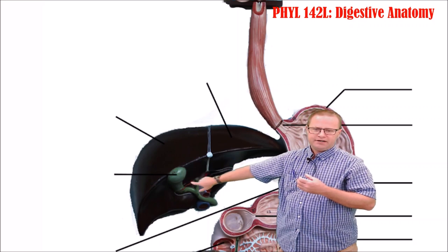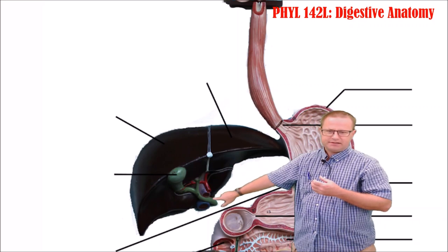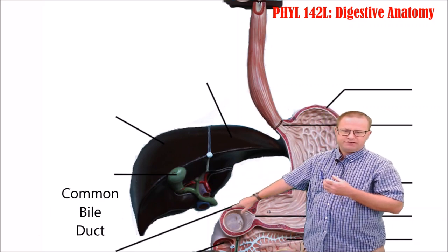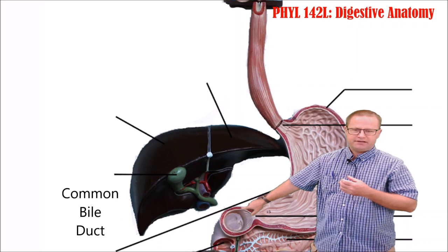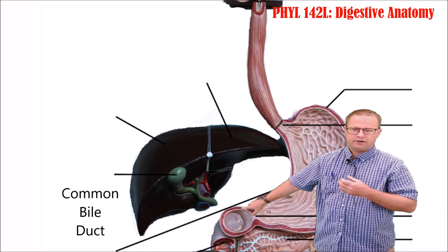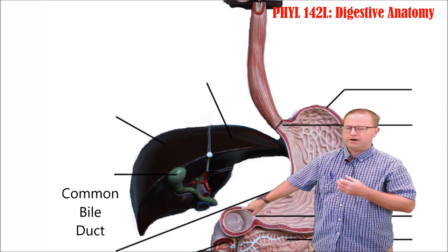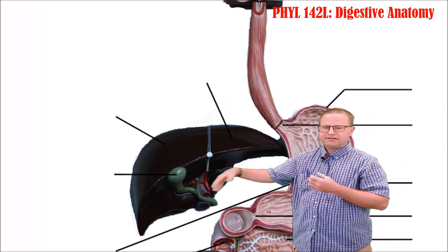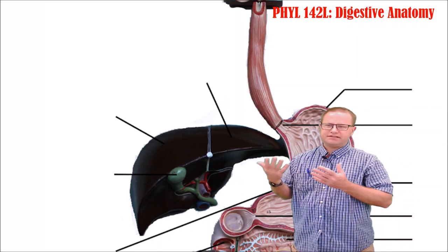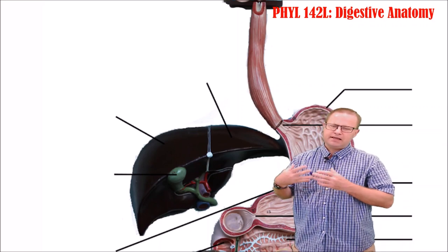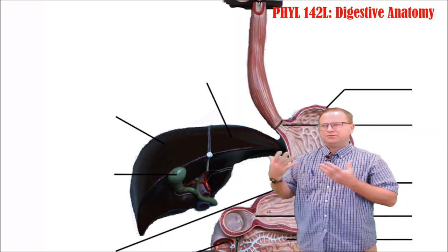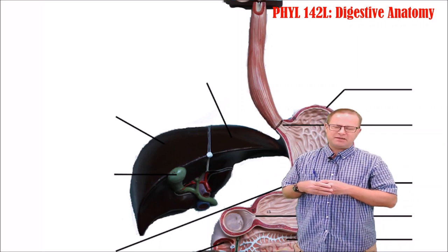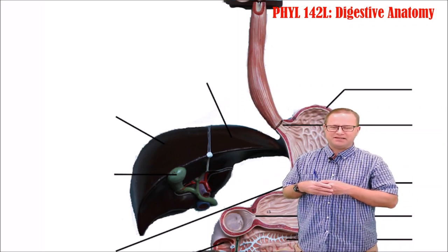Bile travels via the common bile duct and eventually reaches the duodenum, which is the first loop of the small intestine. There are other ducts listed, such as the cystic duct, but because we're doing distance anatomy, you're not really going to see those, so we'll take those off the list.